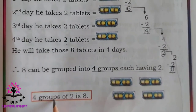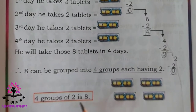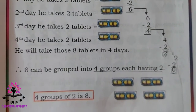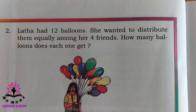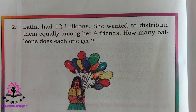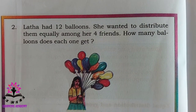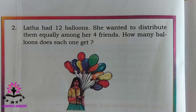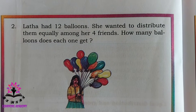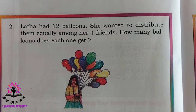Four groups of two is eight. Now, Lata had twelve balloons. She wanted to distribute them equally among her four friends. How many balloons does each one get?